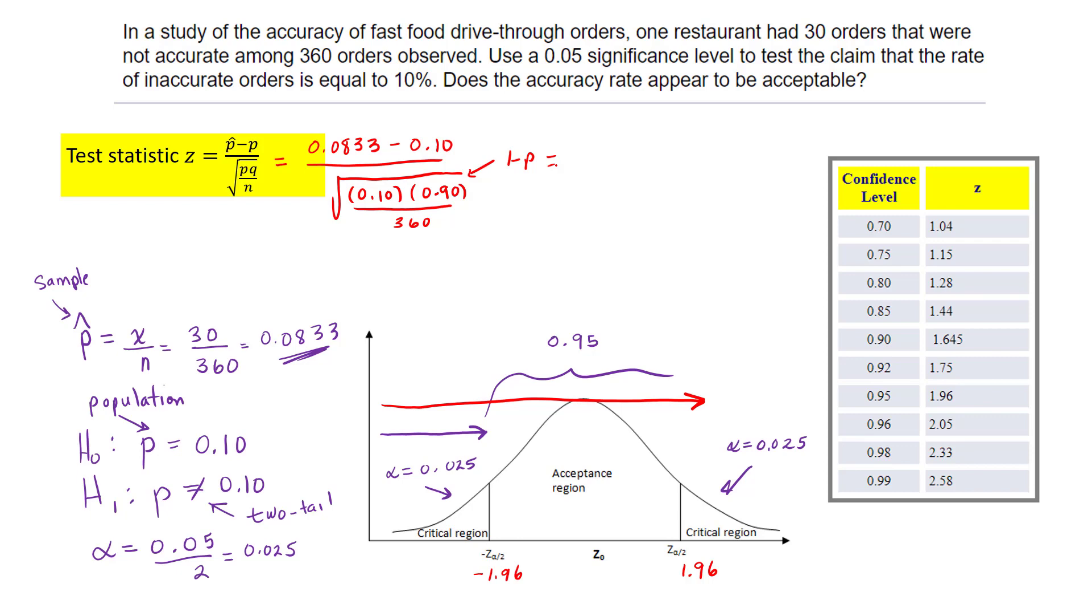Let's do this in steps. The numerator is negative 0.0167. For the denominator, 0.1 times 0.9 equals 0.09, divided by 360. That gives 0.00025 under the square root.